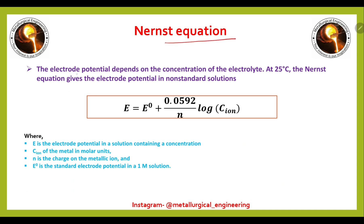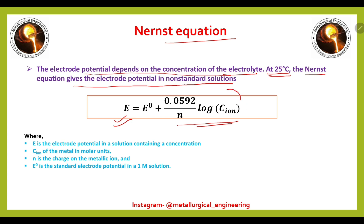The Nernst equation: the electrode potential depends on the concentration of the electrolyte. At 25°C, the Nernst equation gives the electrode potential in non-standard solutions: E = E° + (0.0592/n) × log[C_ion], where E is the electrode potential, E° is the standard electrode potential in one molar solution, n is the charge on the metallic ion, and C_ion is the concentration of the metal in molar units.